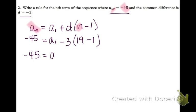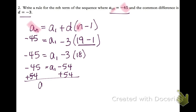Now I can solve for a sub 1 to find my first term. I'm always going to start by doing what's inside the parentheses here. So 19 minus 1 is 18 and then take negative 3 times 18. Last I'm going to add over the 54 and I get a sub 1, my first term, is equal to 9.